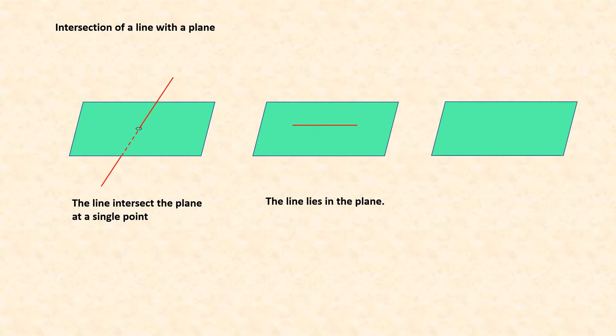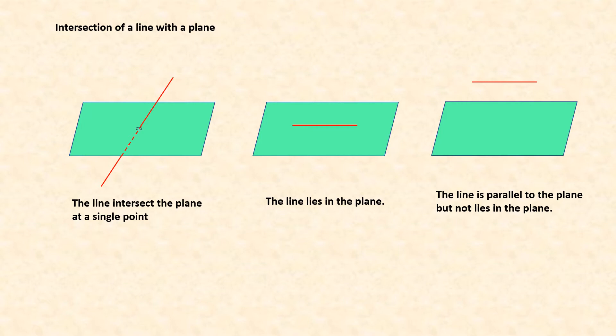The second situation is the line is parallel to the plane but does not lie in the plane. This line is parallel to the plane. If this line is slightly slanting, eventually the line will intersect the plane. So in the third case, the line and the plane are parallel.